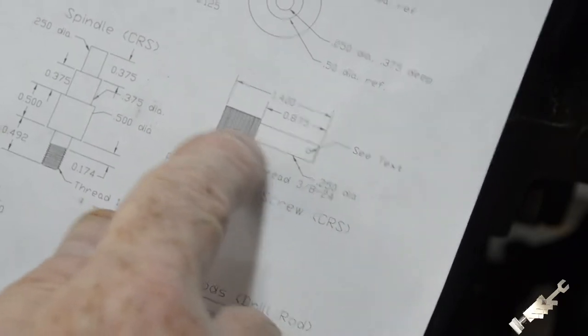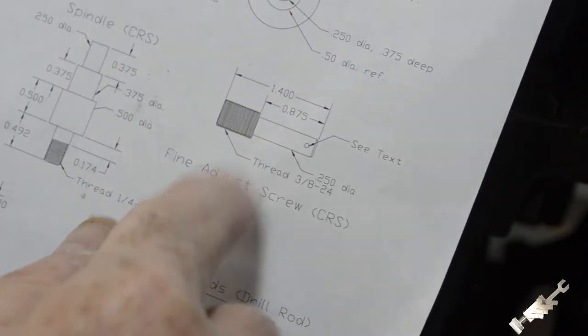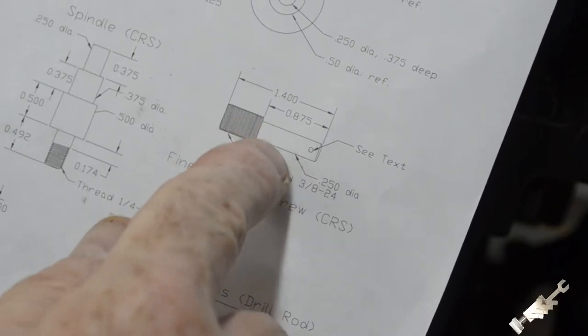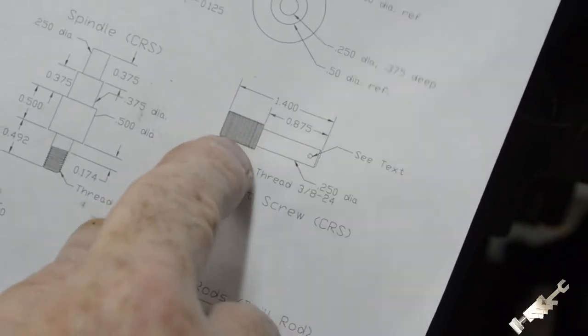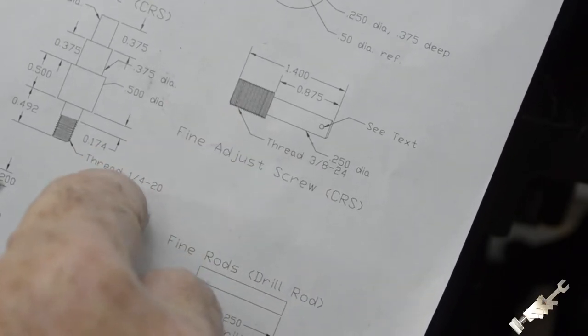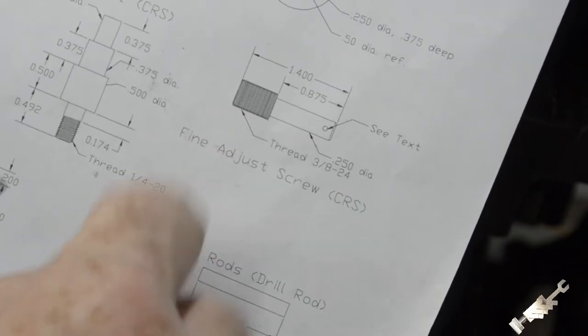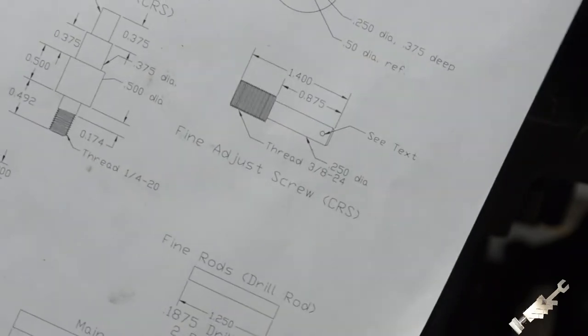I'll turn this down to a quarter of an inch, flip it around, and put it in a quarter inch collet, and proceed to make that 3 eighths by 24 thread. It's a national fine thread. So let's get started.